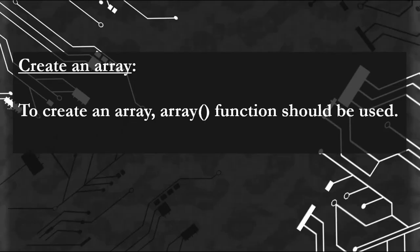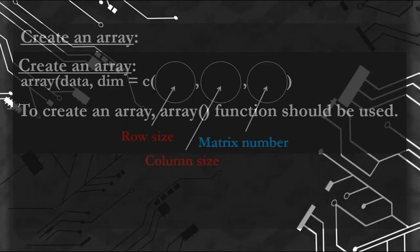To create an array, we need to use the array function. Inside the array function, we need to write our data, and we need to create a vector which has a row size, column size, and matrix number.